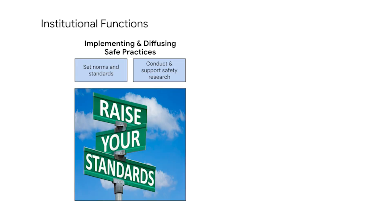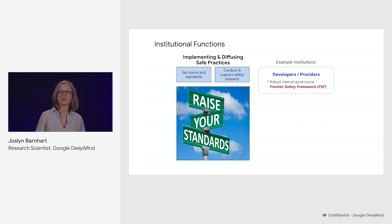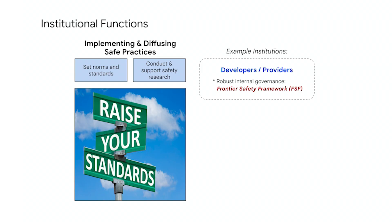Let's look at some institutional functions in more detail. Institutions play a valuable role in implementing and diffusing safe practices — they can both help conduct and support safety research, but also set the norms and standards for how these should spread and be adopted. Within this section, we'll hear about internal governance approaches within the AI lab itself, including Google DeepMind's frontier safety framework, which is intended to both evaluate and mitigate risks within the development and deployment process — maintaining consistent and robust expectations across that lifecycle.